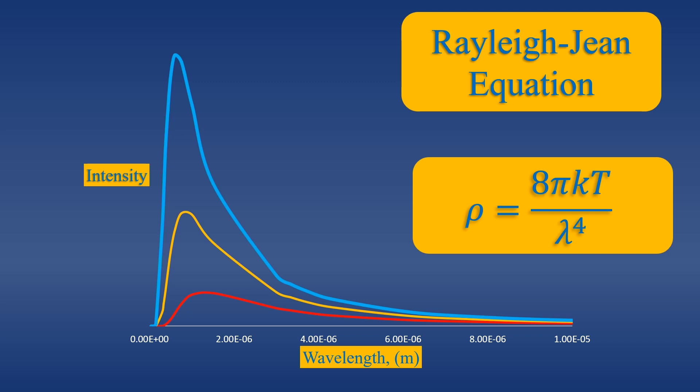Here was the issue at the turn of the century. Mechanics at the time, now called classical mechanics, could not explain this experimental data. For example, the Rayleigh-Jean equation shows the intensity, or rho, is equal to 8πkT over the wavelength, lambda, raised to the fourth power.